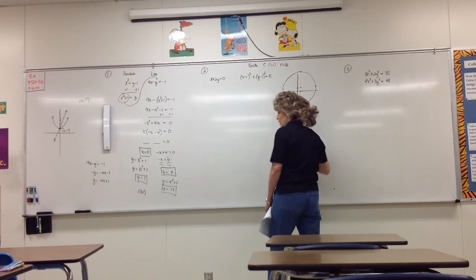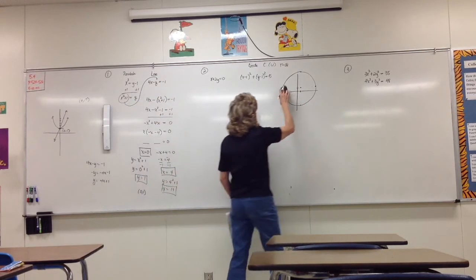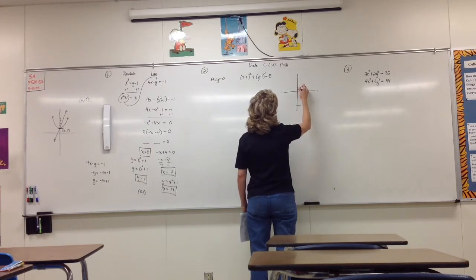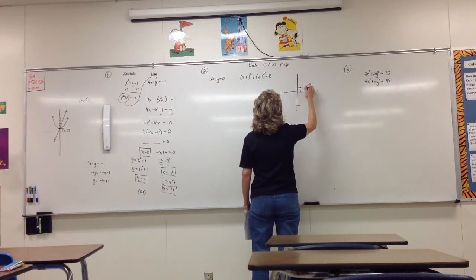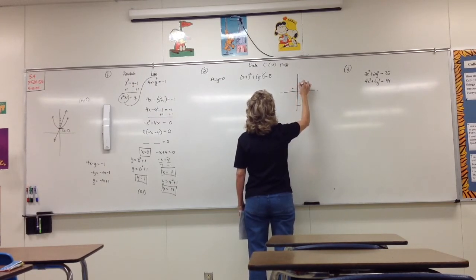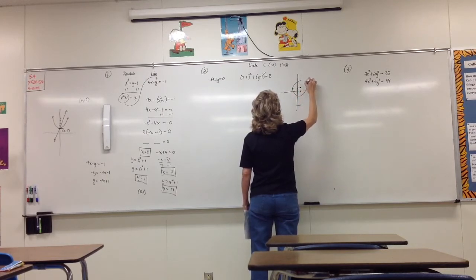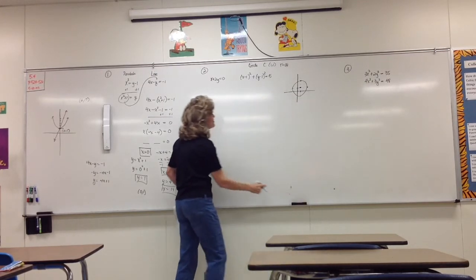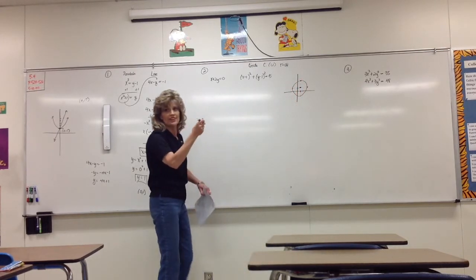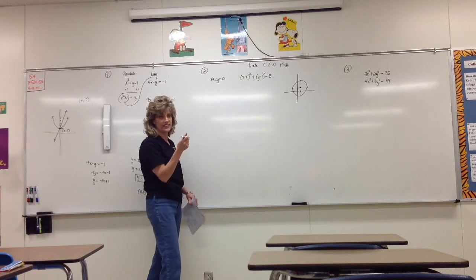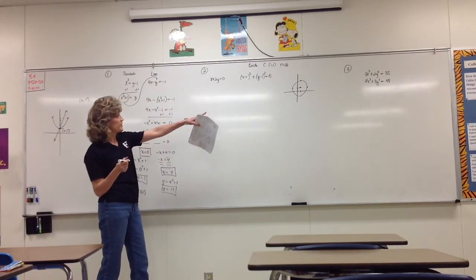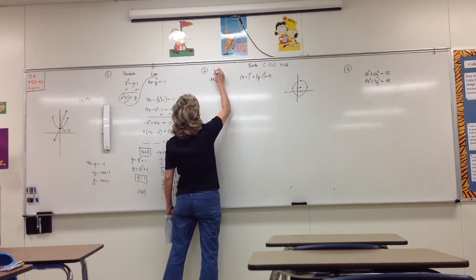The radius is the square root of five, which is a little more than two. So the center is at (1, 1) and the radius extends about a little more than two in each direction. The other equation is a line.